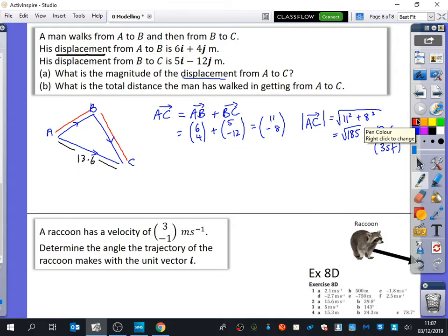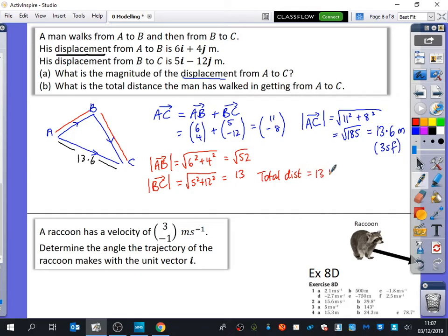So Nabil said we should find out the magnitude of A, B. So I'll do the magnitude of A, B, which is just Pythagorizing that. 6 squared plus 4 squared, so that's 36 plus 16, which is root 52. And then we're going to have the modulus or the magnitude of B, C. So we're going to do Pythagoras to this. 5 squared plus 12 squared, that is 13. So the total distance is going to be 13 plus root 52, which is 20.2 meters to three significant figures.